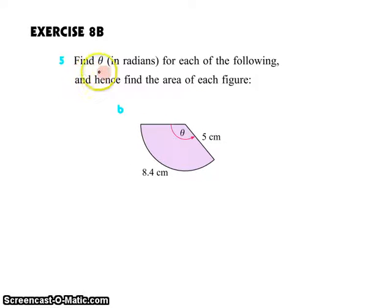The first part of the question says to find the angle theta in radians for this figure and then use that to find the area of the figure. So first off, we want this angle which is describing this arc. We know the length of the arc, so we're going to wind up using the arc length formula.